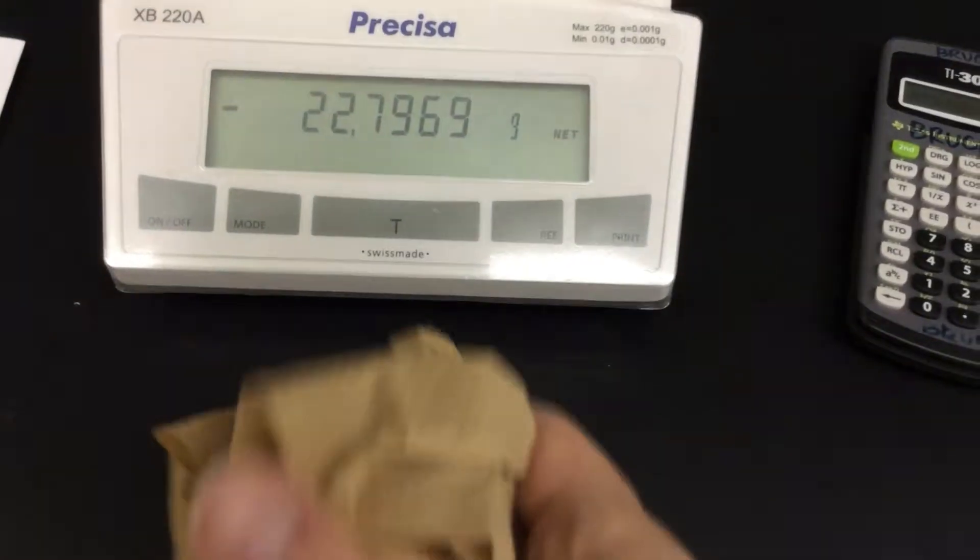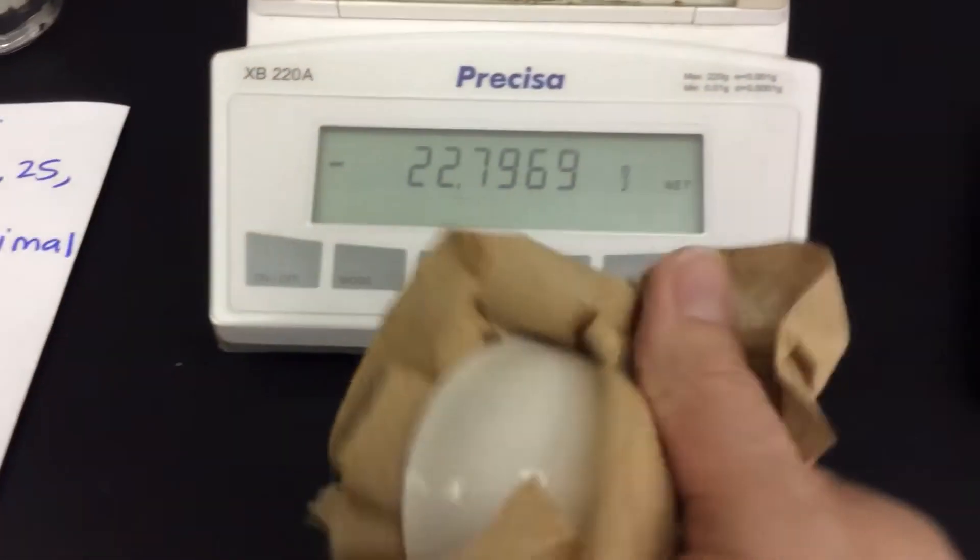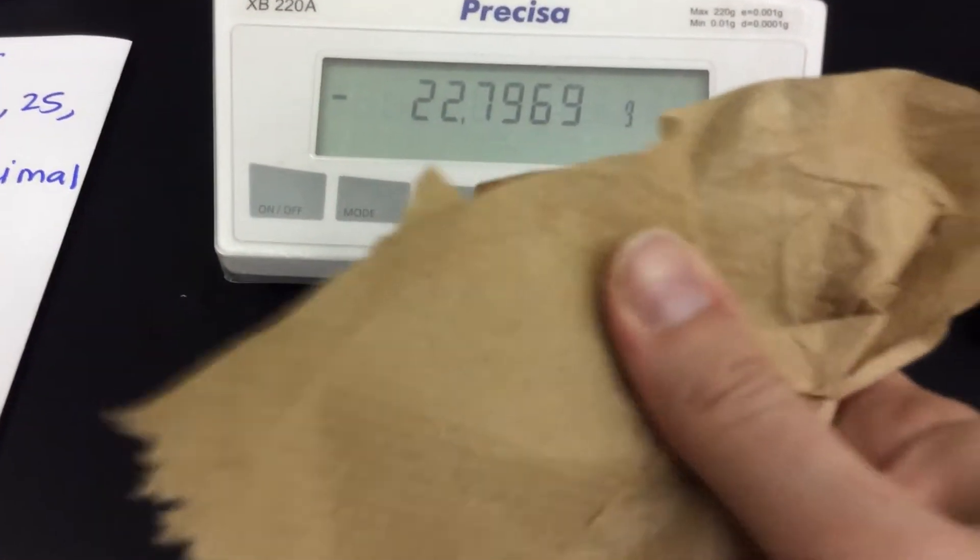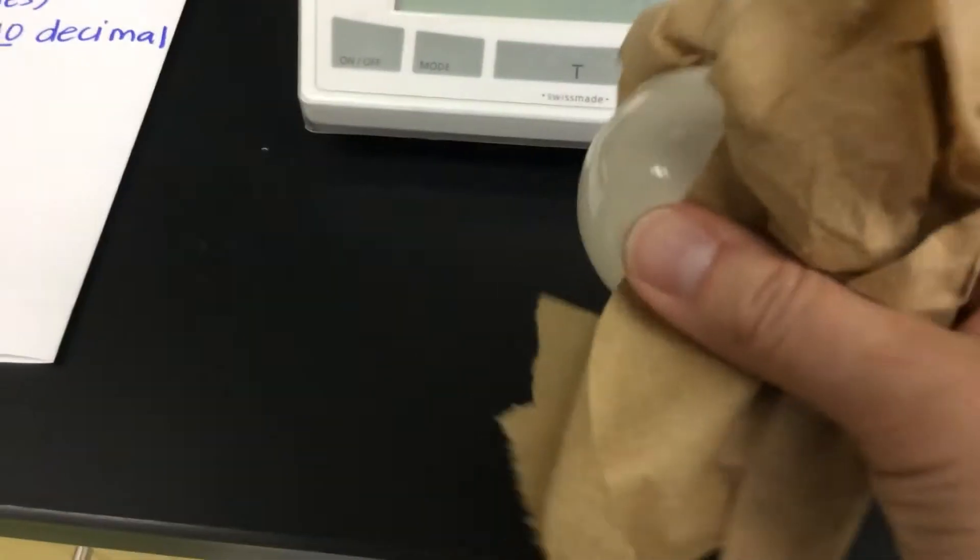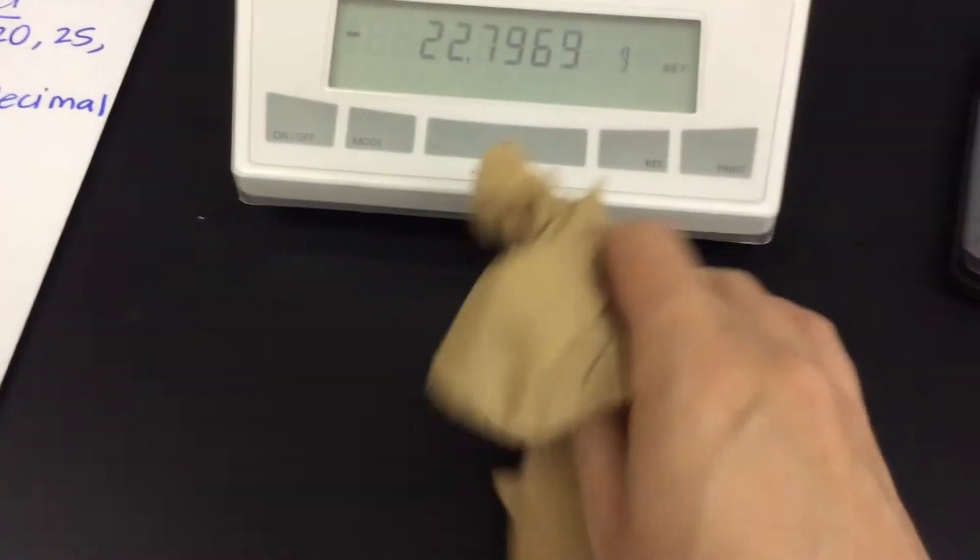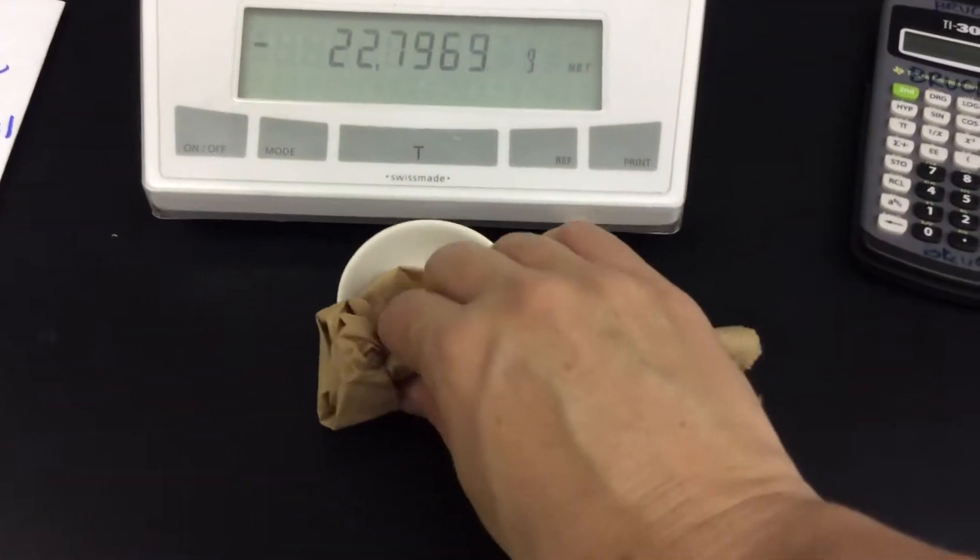So we dry it out really nicely. We ignore anything that this says, right? Because we tared it when there was something on it. There's nothing on it currently. So that means we just ignore anything because obviously you can't have a negative mass. Nice and dry. So that was trial one.